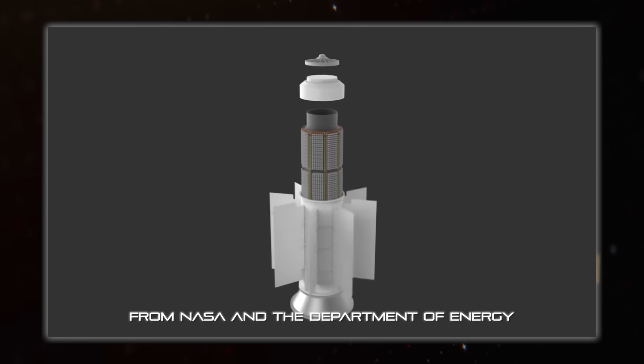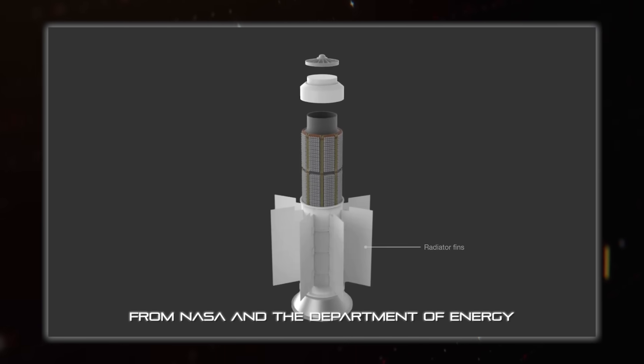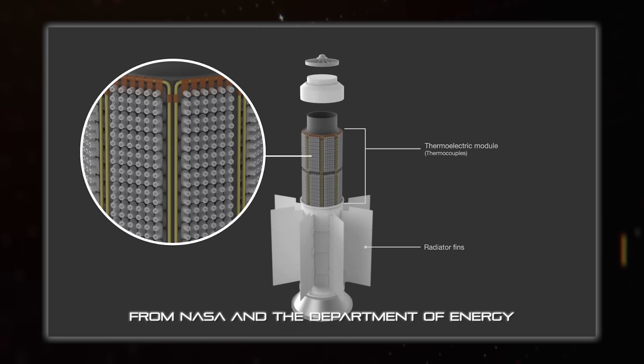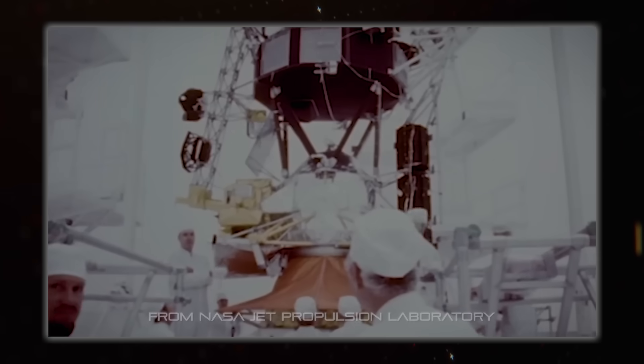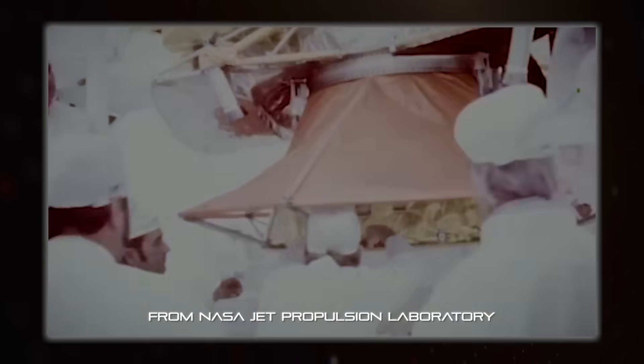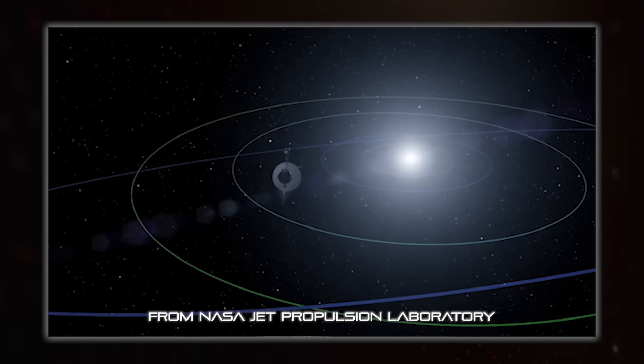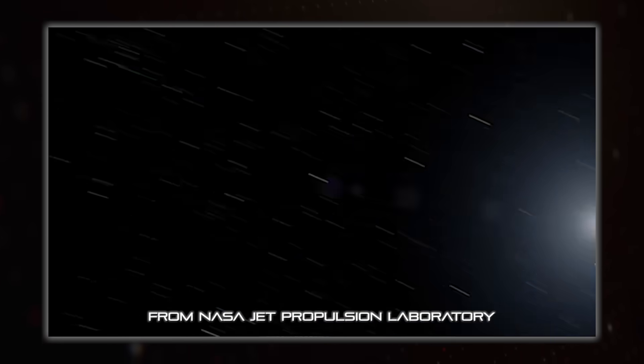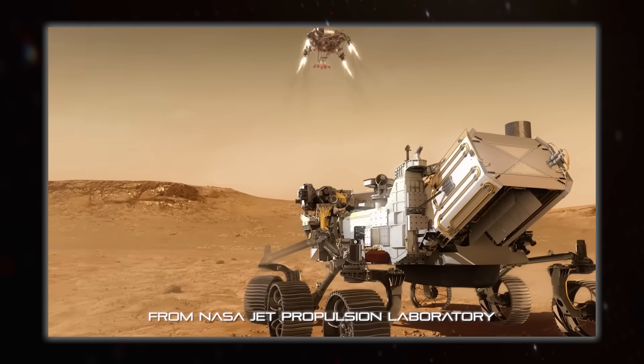On the outside of the RTG are radiator fins to create a cold side, and between those and hot fuel are a bunch of thermocouples, which generate voltage thanks to the temperature difference. The power they output tails off as the radioactive fuel decays, but that takes a very long time, so these have seen plenty of use for long-term probes like Voyager or Perseverance.